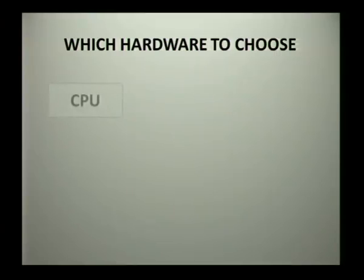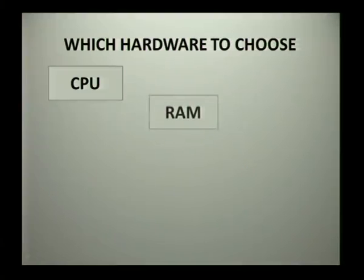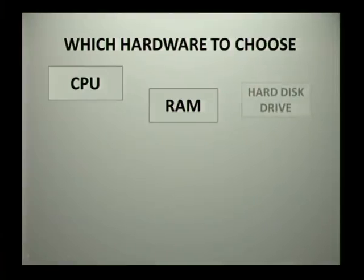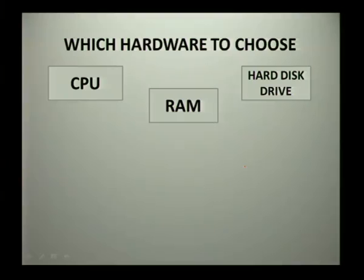When choosing which hardware to buy: for your CPU, think about the size and how fast you want your computer to perform. Your RAM depends on your CPU — a bigger CPU means you need more RAM to assist the processing cycle. Your hard disk drive depends on how much you want to store, and if you have a lot of storage, you need a faster CPU to process all that data as well as RAM to assist in accessing it.